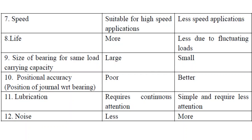The positional accuracy of journal and bearing is very poor — the center-to-center distance does not match and there is always some eccentricity — while the positional accuracy is better in rolling contact bearings. Sliding contact bearings require continuous lubrication, while rolling contact bearings require no lubrication because of the balls or steel rollers interposed between the moving and fixed elements.